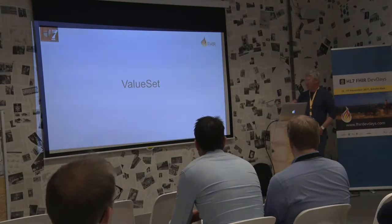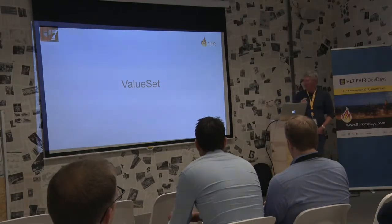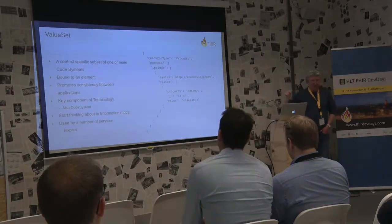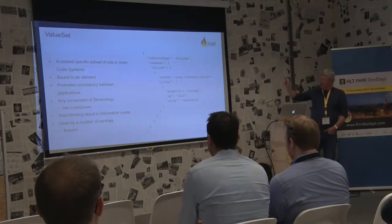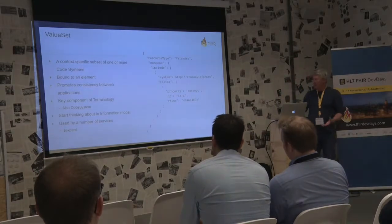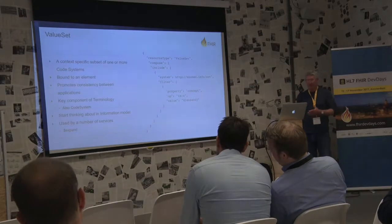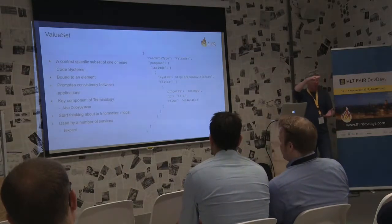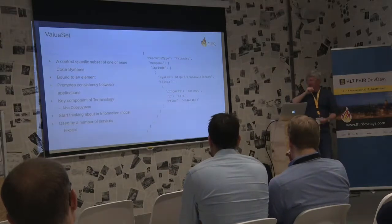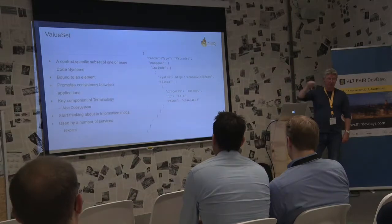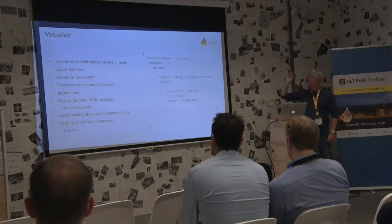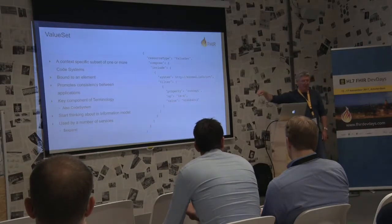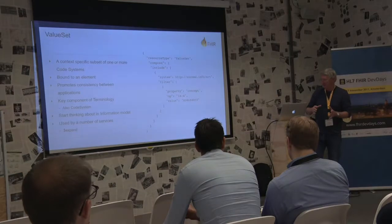Getting into coding, you'll come up against the value set resource very quickly. A value set is a context-specific subset of one or more code systems. What that means is you take a code system and say, in this particular context — say I'm an ED system recording ED diagnoses — I'll create a subset out of SNOMED containing the 2,000 most common diagnoses I'd see in ED. You bind it to an element — a particular element inside a resource is bound to a value set. Its purpose is promoting consistency between applications; it's a key component of terminology work, and something you want to start thinking about at the information model stage.